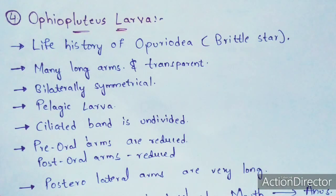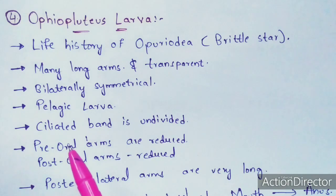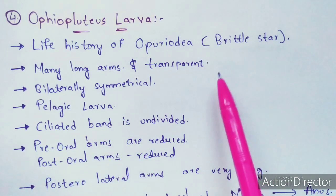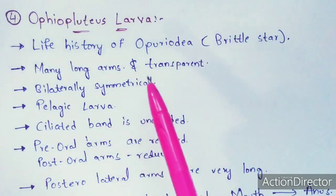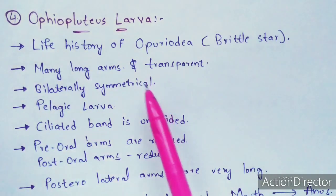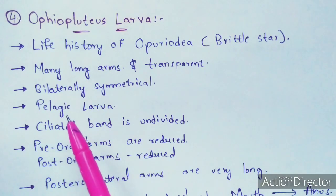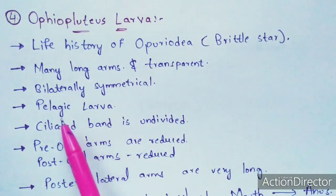Pelagic means that this larva has a characteristic whereby it can escape from a crowded area. For example, if you take an area which consists of different species of larvae, this larva has the capacity to escape from those different species. That property is called pelagic, and hence it is called a pelagic larva.